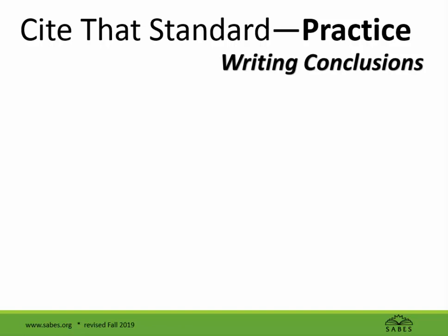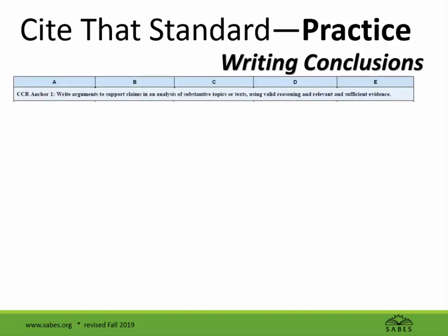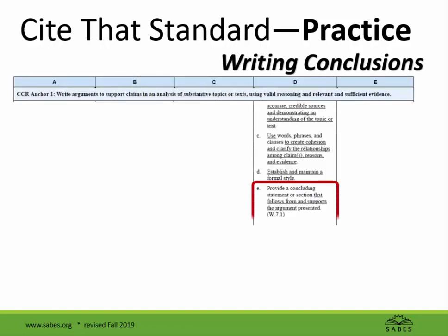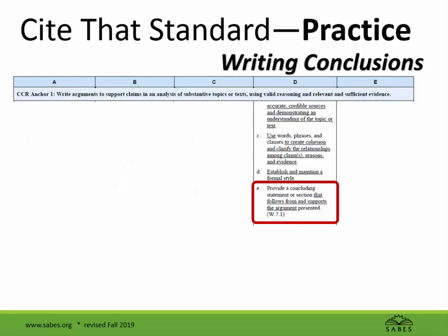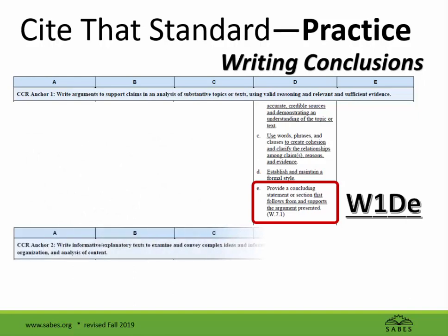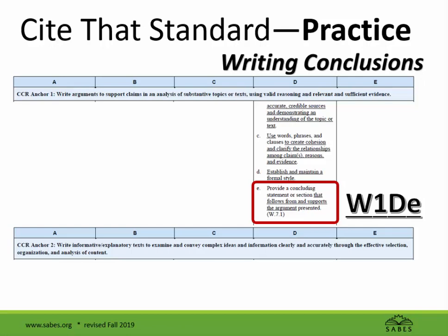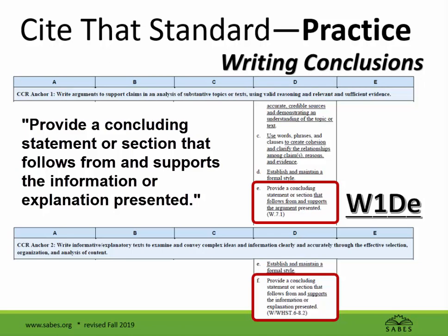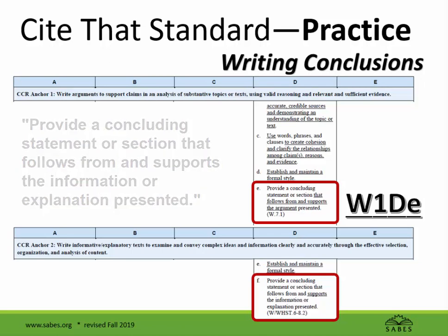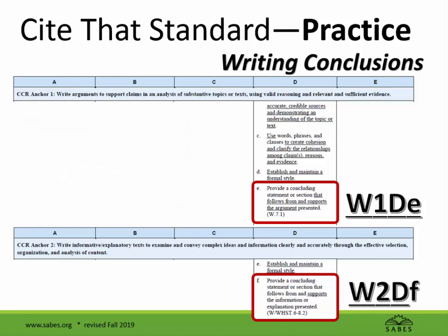Now what? What next depends on what kind of writing you want to do with your students. Writing Anchor 1 is for writing arguments. Level D, small letter E, says: 'Provide a concluding statement or section that follows from and supports the argument presented.' So this can be notated as W1De. Writing Anchor 2 is about informative and explanatory texts. Level D, small letter F, says: 'Provide a concluding statement or section that follows from and supports the information or explanation presented.' Writing Anchor 2, level D, small letter F — W2Df.